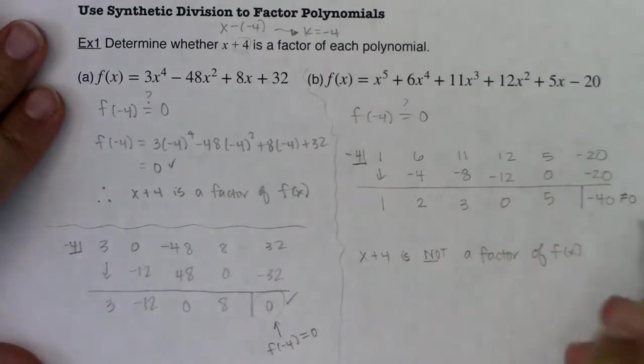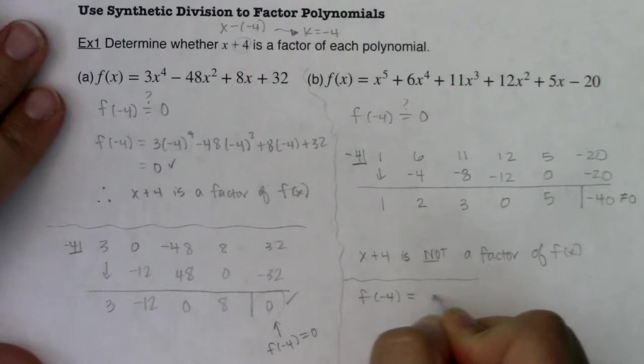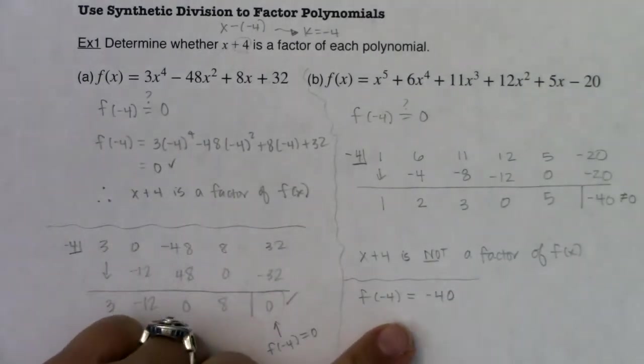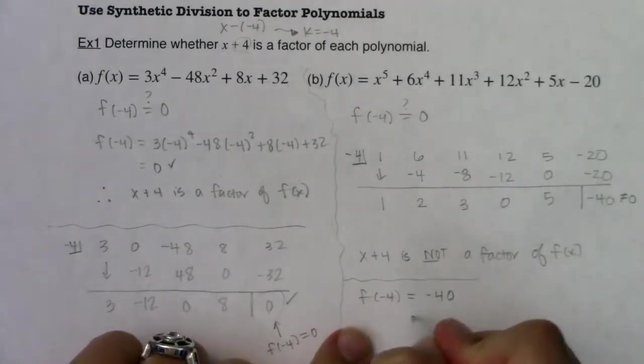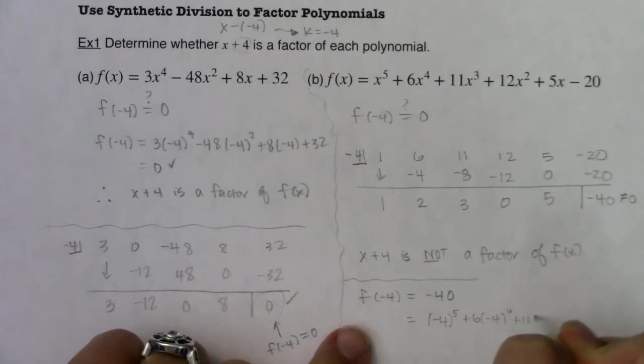Alright, and I also know another piece of information. So in addition, you also know f of negative 4 is equal to negative 40. Right? And that's easier for me to calculate. Like I think it's much easier for me to just find the remainder from synthetic division rather than sitting here and doing negative 4 to the 5th, plus 6 times negative 4 to the 4th, plus 11 times negative 4 cubed, plus 12 times negative 4 squared. Gosh, I'm going to run out of room. Plus 5 times negative 4 minus 20. That is not worth it to me.